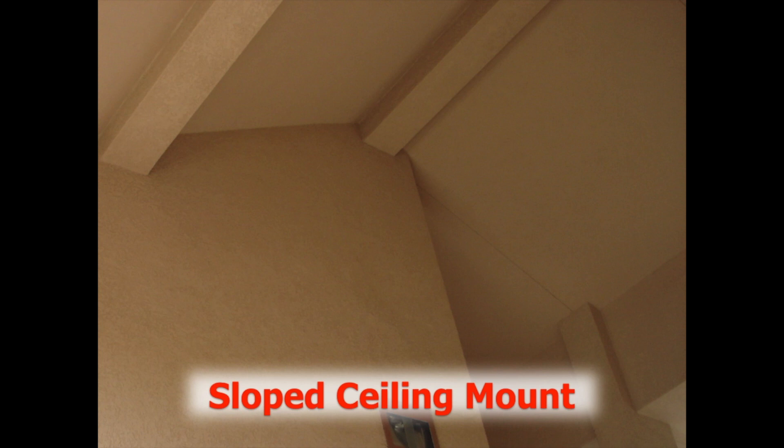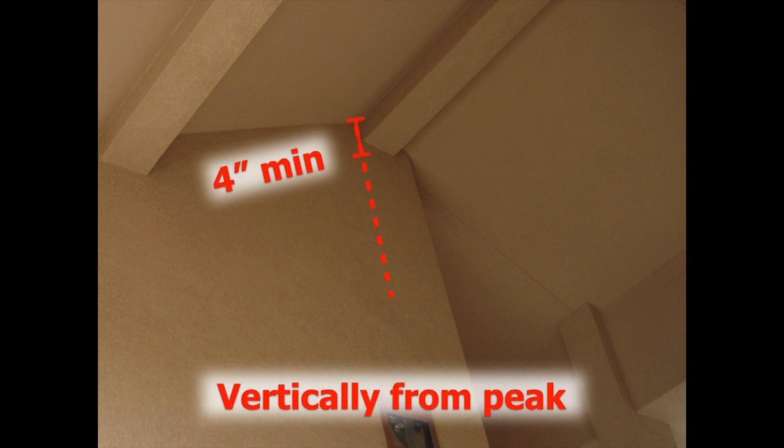First, if we look at sloped ceiling mounts, smoke alarms cannot be closer than four inches vertically from the peak where there could be dead air movement and the smoke may not reach that area to trigger the alarm. We'll shade in this region where alarms could not be installed on a sloped roof.